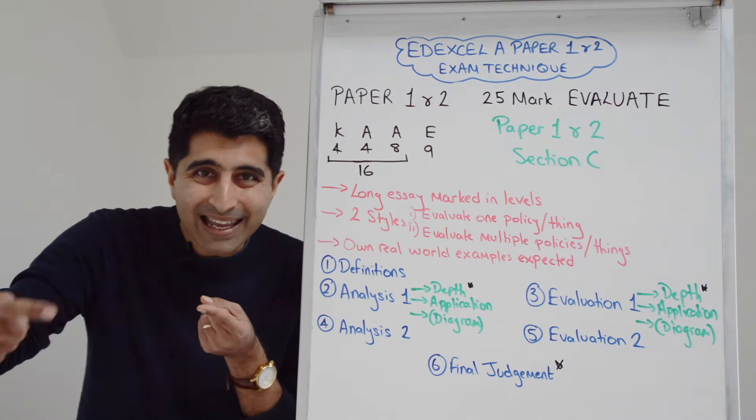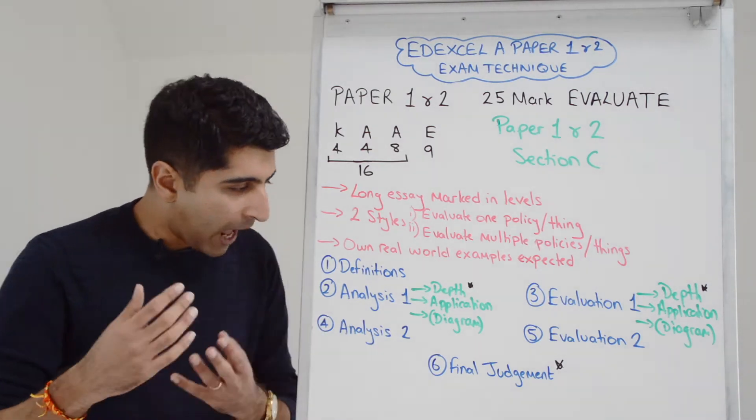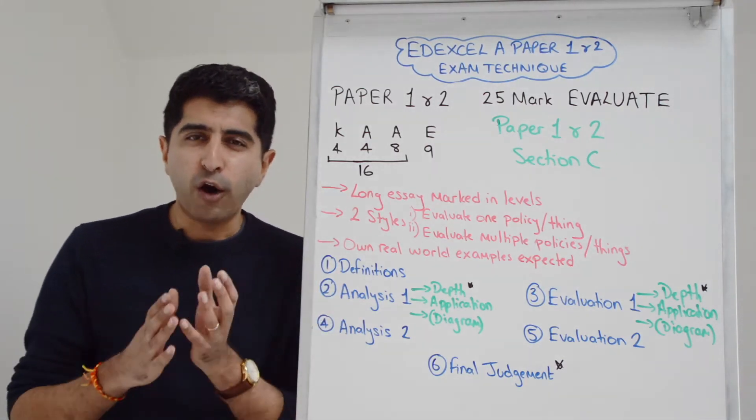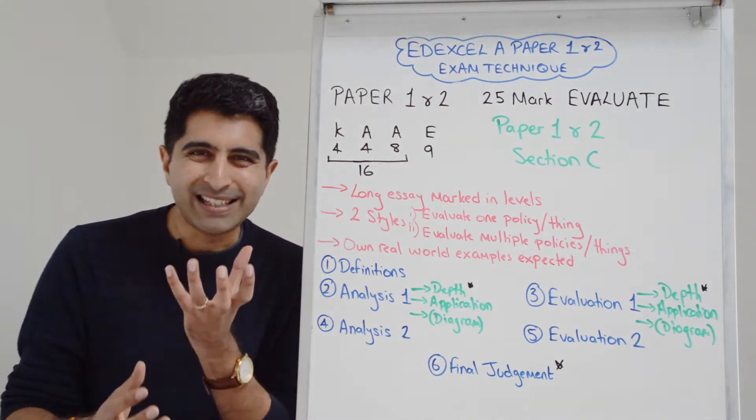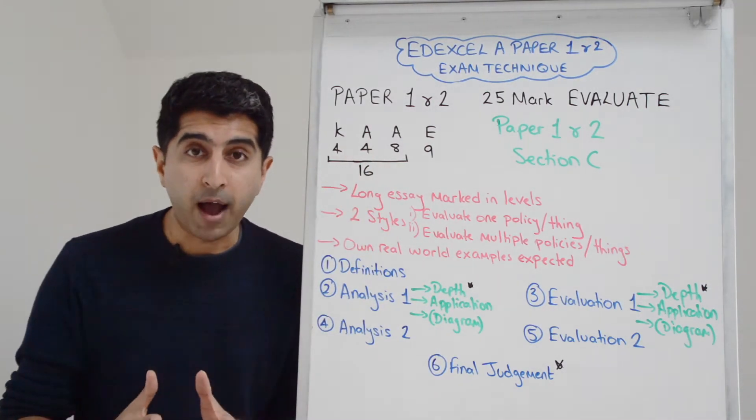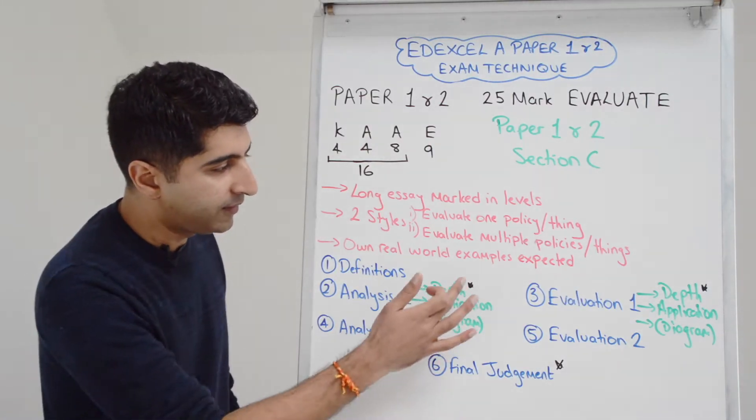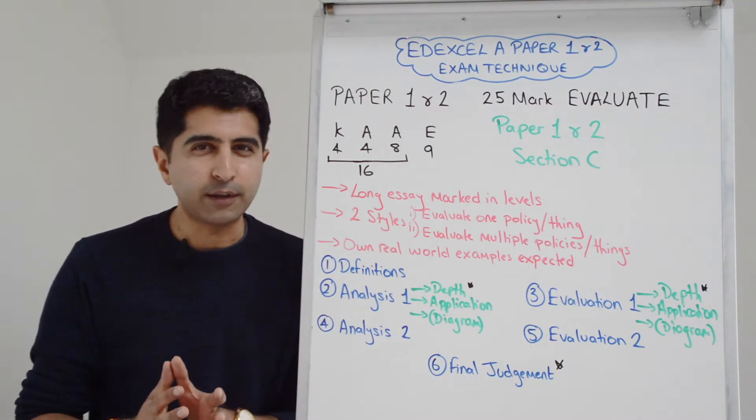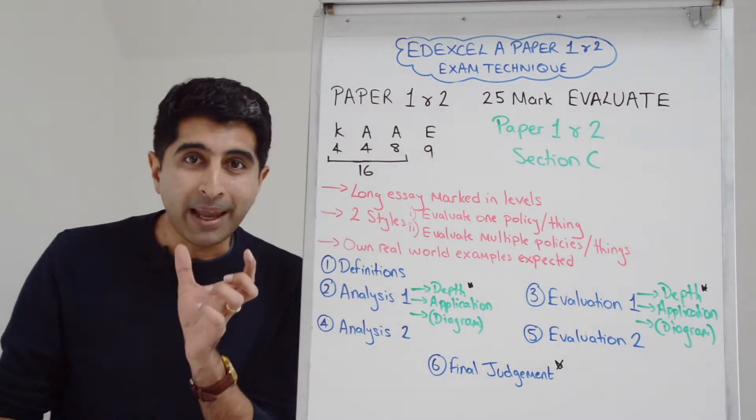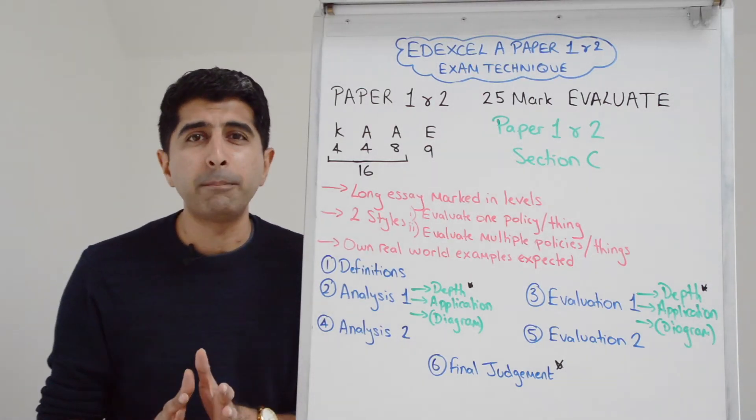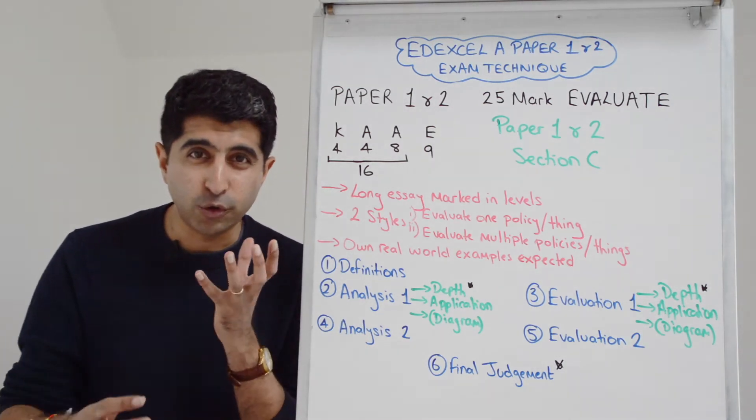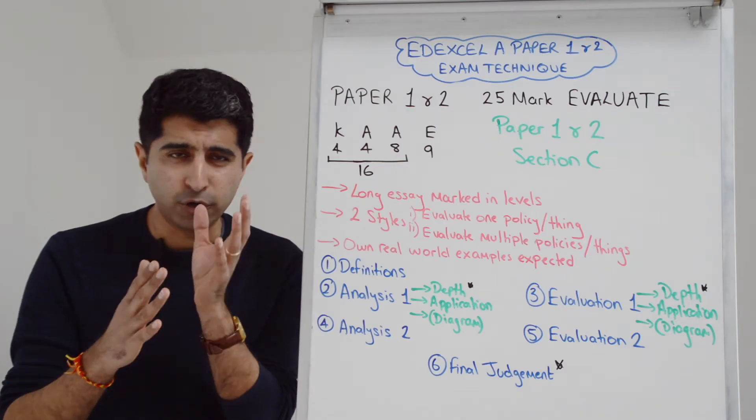Then you're looking to write two analysis paragraphs. Analysis paragraph one and later analysis paragraph two. In your analysis, it's crucial that you're writing depth. This is you writing knowledge of economic theory, depth of explanation. That is absolutely fundamental given that there are 16 marks in total for how well you can write depth of analysis.